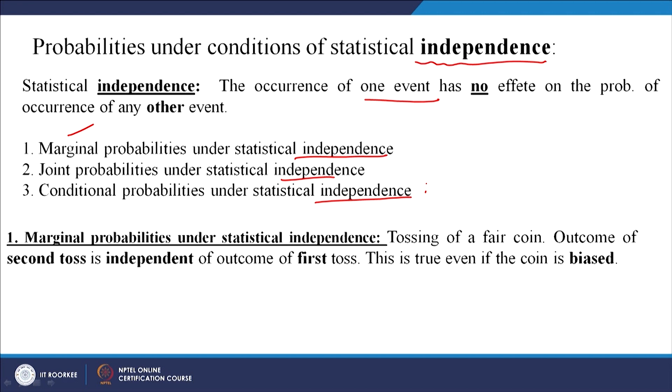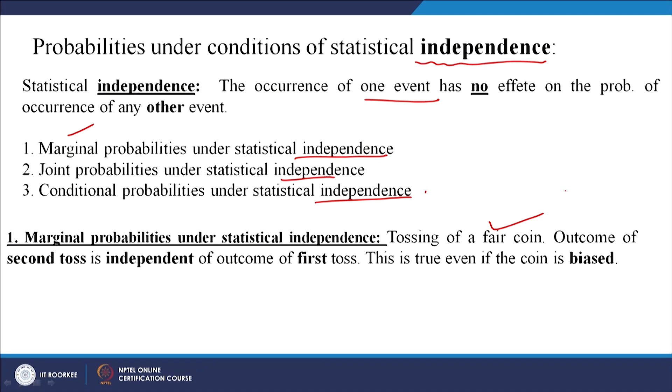Marginal probability under statistical independence: consider tossing a fair coin. When I say independence, the next event does not depend on the previous event. If you toss a fair coin and want to know the probability of heads, it would be 0.5. If you toss it a second time, the probability of heads does not depend on the outcome of the first toss — it is still 0.5.